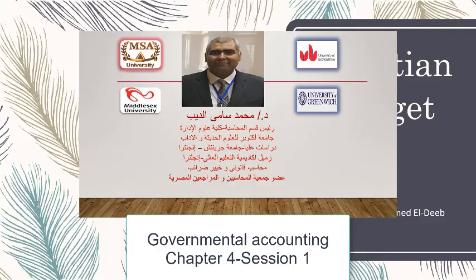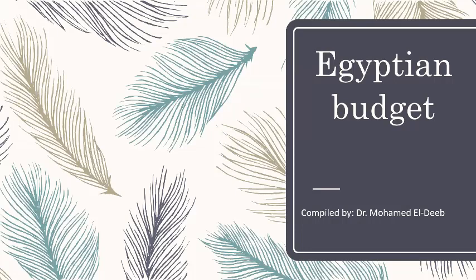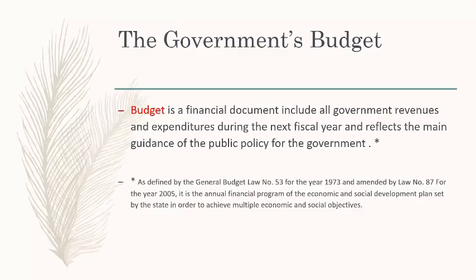Today we are going to start our last chapter, which is the Egyptian budget. This chapter is about the Egyptian state budget, or as it is called, Mwazna al-Ammal al-Dawla. This part is related specifically to Egypt, and all the data inside that chapter have been extracted from the annual circular budget of the state, including all the details about the budget.